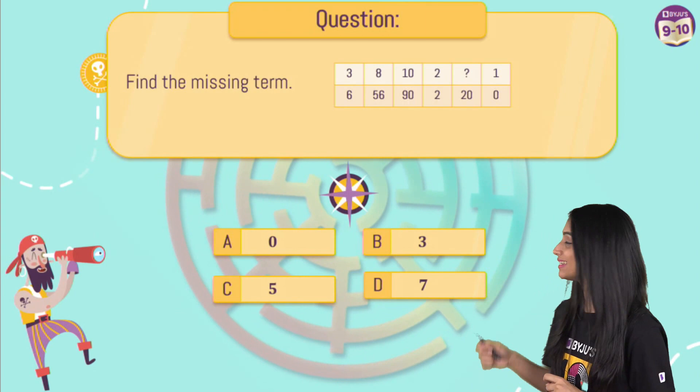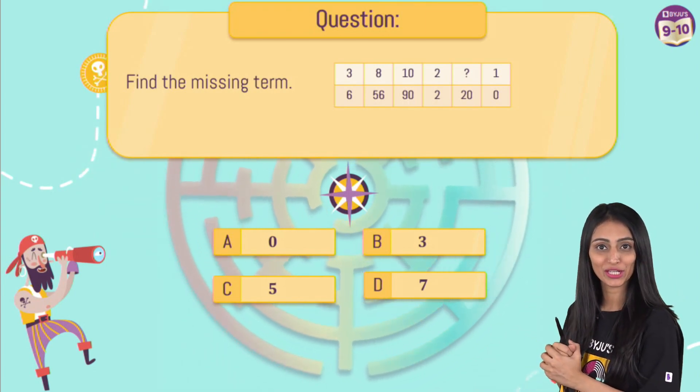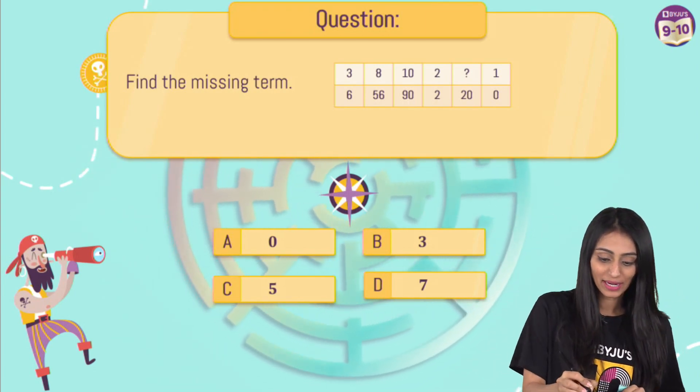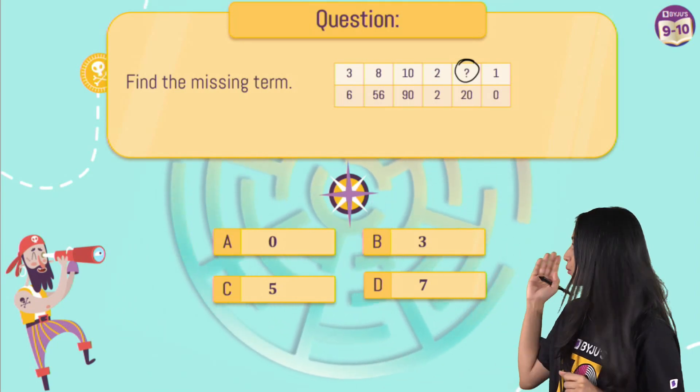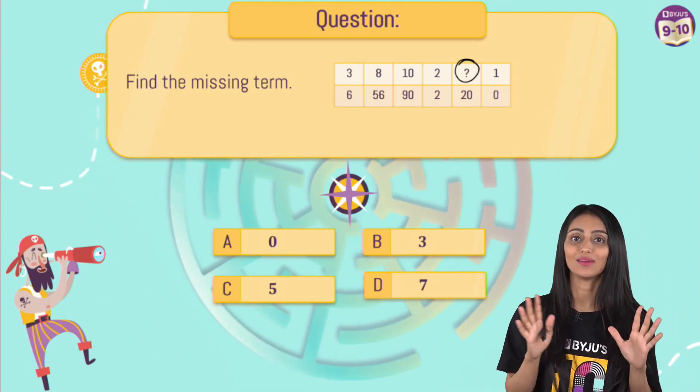Find the missing term and you can see these numbers in this table over here in these two rows. So you have to find this missing term over here and four options are given, you have to figure out the right option.